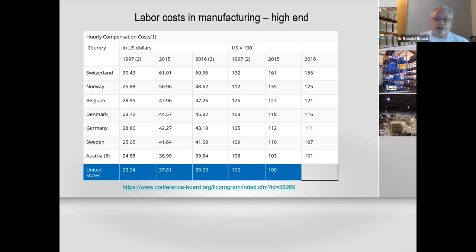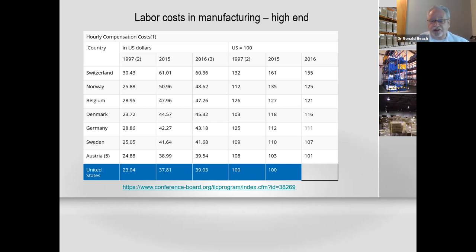This is looking at burdened labor costs in manufacturing, which includes benefits, holiday schedules, and everything. Figuring the US at $100 an hour, Switzerland is the highest at $155 an hour. Then comes Norway, Belgium, Denmark, and Germany. What do they all have in common? They're high tech, with extensive benefit packages and lots of holidays.